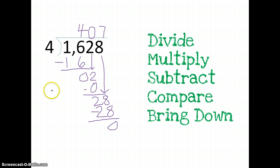Now, if I want to check my answer, 407 times 4. 4 times 7 is 28. Write down my 8, carry my 2. 4 times 0 is 0, plus 2 is 2. And then, 4 times 4 is 16. So I end up with 1,628, which is exactly what I have right here.